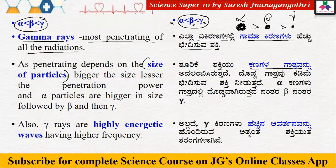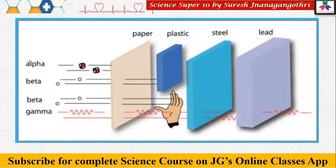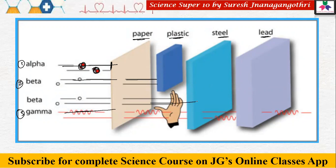Gamma rays are the most penetrating of all radiations because of smaller particle size and higher energy. Alpha particles — being the largest — can be stopped by just a sheet of paper. Beta particles can penetrate paper but are stopped by plastic. Gamma radiation can penetrate paper, plastic, skin, steel, and even lead. So gamma is the most powerful in terms of penetrating power.